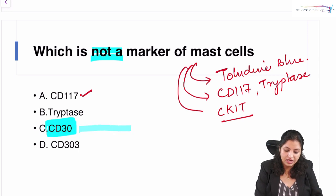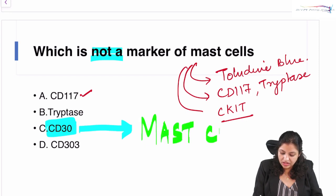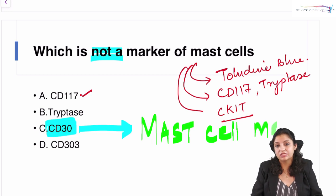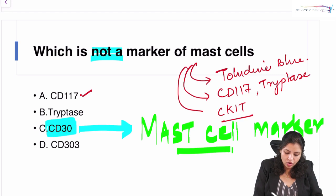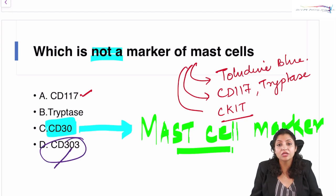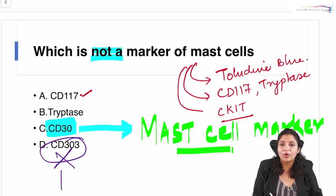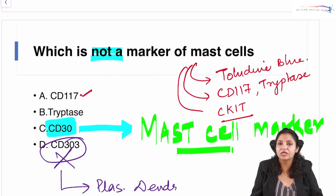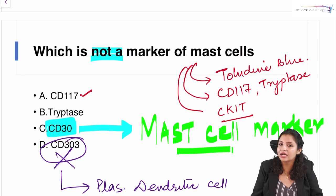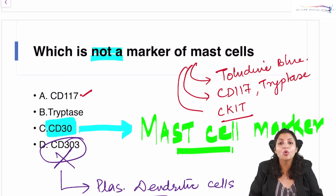CD30 is a new mast cell marker — specifically, neoplastic mast cells are known to express CD30. Remember this as a recent update of the new WHO classification. On the other hand, CD303 is NOT a marker of mast cells — CD303 is a marker for plasmacytoid dendritic cells. So CD117, tryptase, and CD30 are all mast cell markers, whereas CD303 is a plasmacytoid dendritic cell marker.